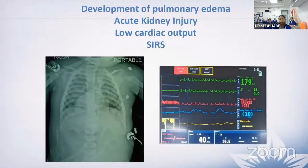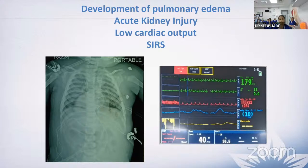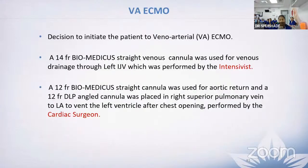We were now dealing with four problems: pulmonary edema, acute kidney injury marked by rising creatinine and dropping urine output, low cardiac output with mean pressures of 28 mmHg, and systemic inflammatory response syndrome. Decision was made to initiate veno-arterial ECMO.